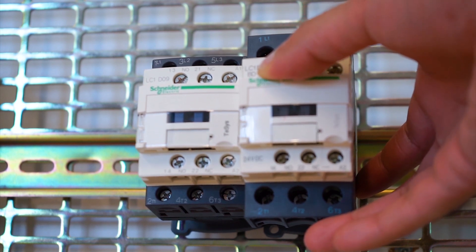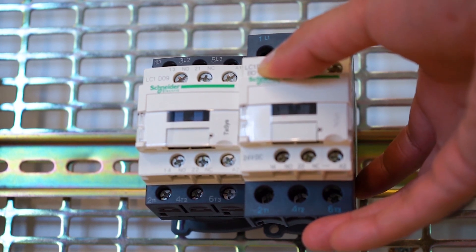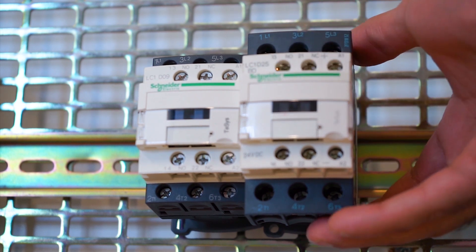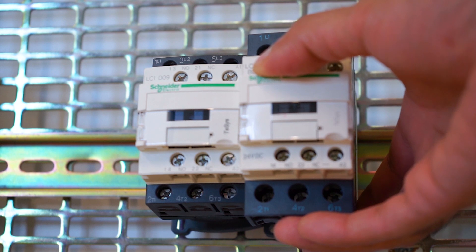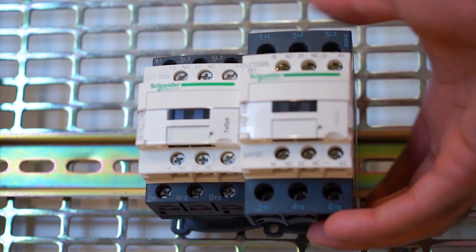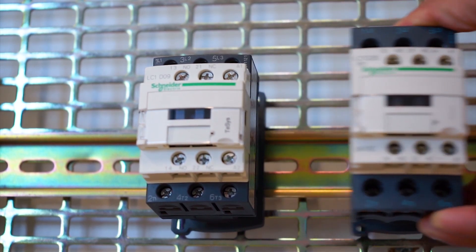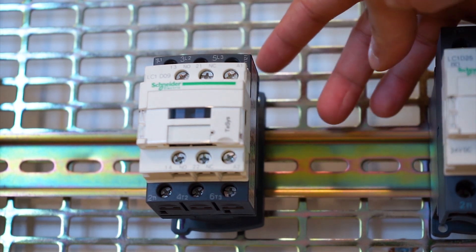So for DC contactors, the part number is complete. Here you can see the coil voltage written on the front. And for AC, you will have to look at the top back end. It will be marked with the coil voltage of the AC contactor.